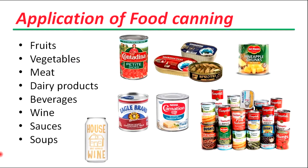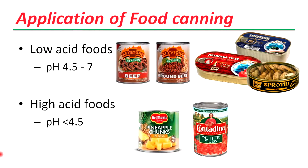Food canning can be used for fruits, vegetables, meat products, dairy products, wine sauces, and soups. Acid foods such as fruits and tomatoes naturally contain citric, malic/lactic, and other organic acids that limit the growth of many pathogens and are less of a concern for food safety. But lower-acid foods such as meat, fish, mixed soups, and vegetables provide a favorable environment for microorganisms and must be canned at higher temperatures.